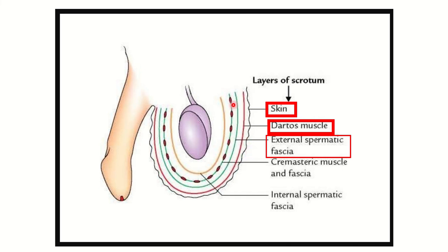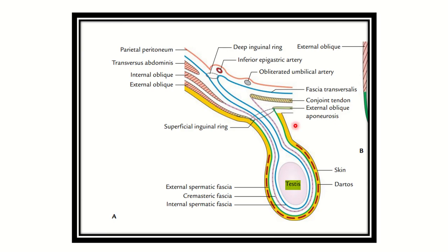Then we can see there is muscle and fascia — it is the cremasteric muscle and fascia. This reddish area is the muscle and the area between is the fascia. Then there is a layer of internal spermatic fascia, and finally the testes. So the layers of the scrotum are: skin, dartos muscle, external spermatic fascia, cremasteric muscle and fascia, internal spermatic fascia. Just beneath the dartos muscle is the external spermatic fascia.